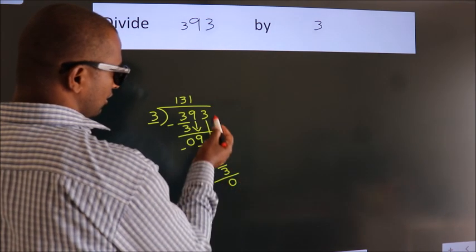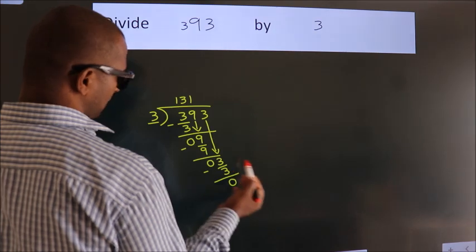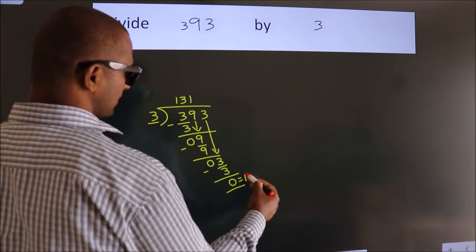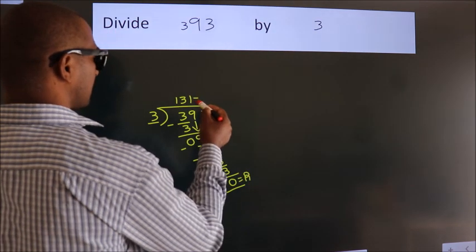After this, no more numbers to bring it down. So we stop here. This is our remainder. This is our quotient.